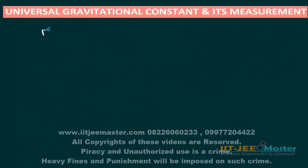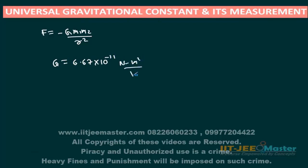We have written the formula for Newton's Law of Gravitation as minus G M1 M2 upon R squared. Capital G is the Universal Gravitational Constant, and its value is 6.67 × 10 to the power minus 11 Newton meter squared per kg squared. This is the Universal Gravitational Constant — wherever you go in the universe you will get the same value at every point.